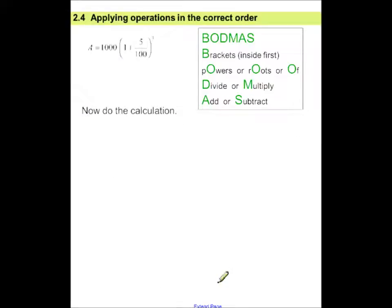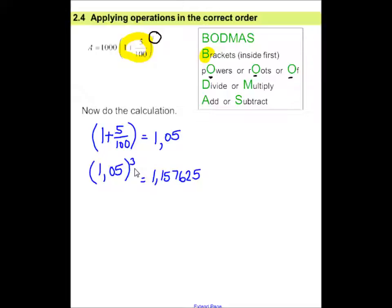So now we're going to do the calculation. Well, if we go to BODMAS, we must do brackets first. So I'm going to do the calculation inside the bracket. And that is 1 plus 5 over 100 will give you 1.05. After you have done that, we now have to go to the powers, roots or of. In this case, 3 is to the power of 3. So I'm going to take my answer from the previous step. I'm going to raise it to the power of 3 and my answer will be 1.157625. The next thing I do is multiply and or divide. And this clearly means multiply. So what we're going to do, you're going to take 1,000. You're going to multiply it by your previous answer. And your answer now is 1,157.625.